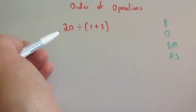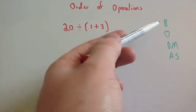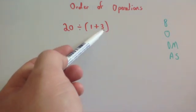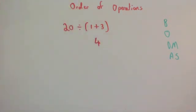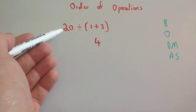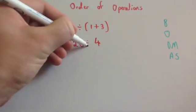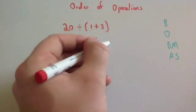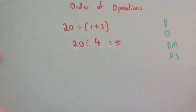This time we've got 20 divided by (1 plus 3). We have to do the brackets first, so we do 1 plus 3, which is 4. Then include the rest of the sum: 20 divided by 4, which is equal to 5. So the answer is 5.